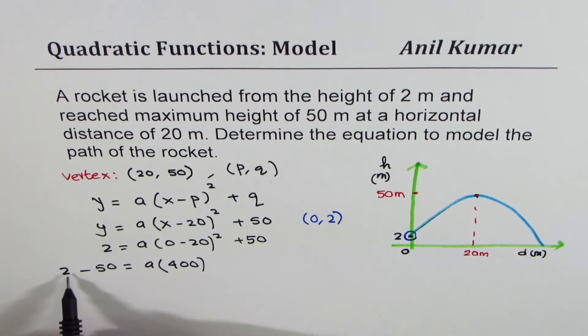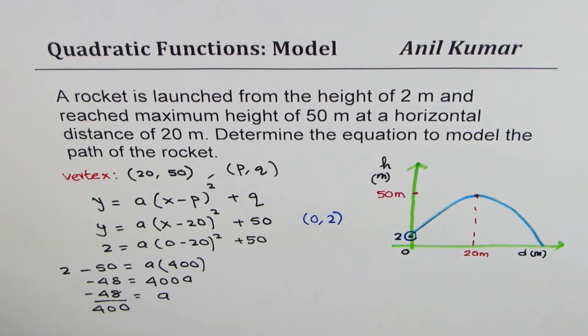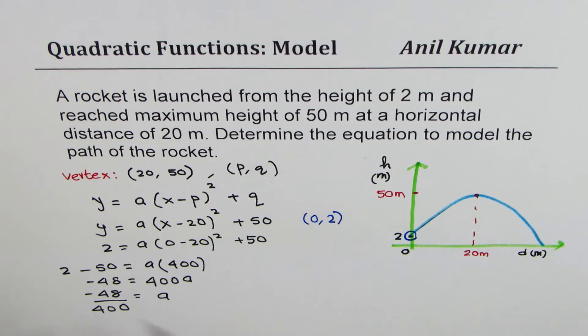This will give you the value of a as minus 48 divided by 400. You can always simplify this. Let's write it on this side. So a is minus 48 over 400. You can use calculator.